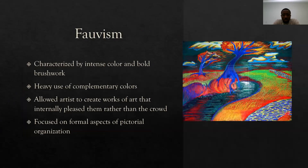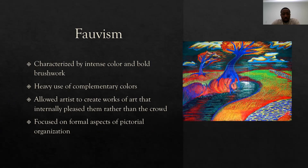First, we're going to talk about Favism. It's characterized by intense color and bold brushwork. As you can see the image on the right, there's a lot of exotic colors — they're bright. You can see the blue is popping out from the tree, the green, and the oranges. Those colors you typically don't see in artwork together, but in Favism this allows artists to create works of art that please them rather than the crowd. It's a heavy use of complementary colors, and they also focus on the formal aspects of pictorial organization. We see the trees, the path, the green representing grass — so this is a landscape.